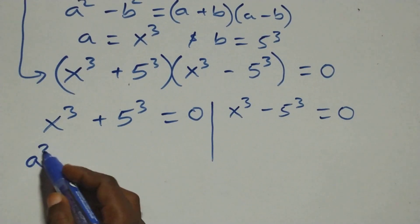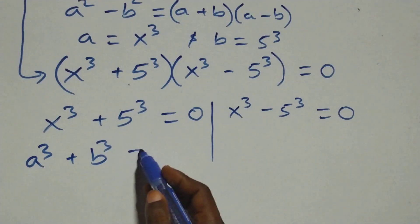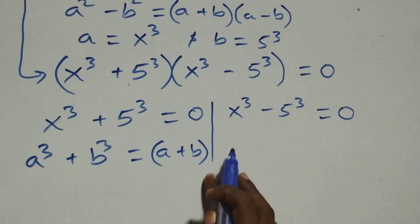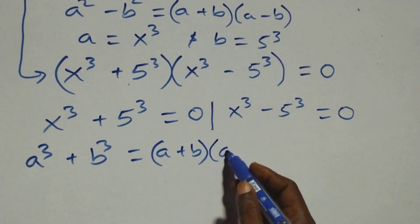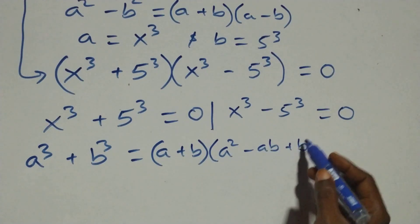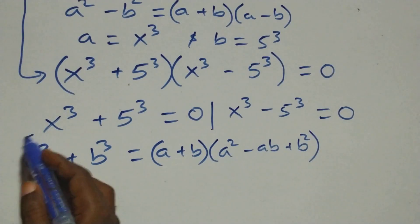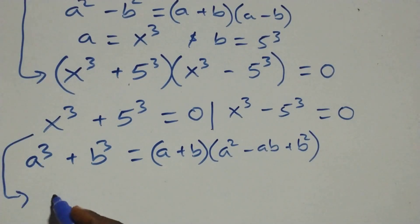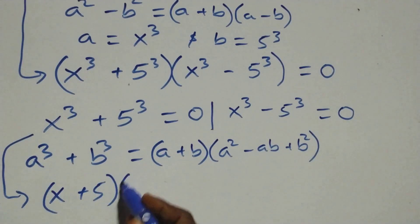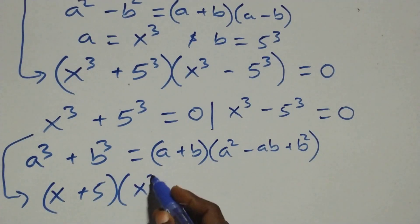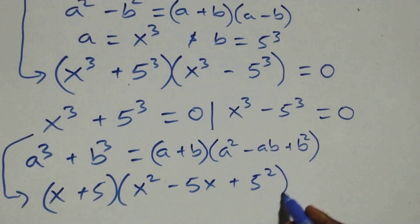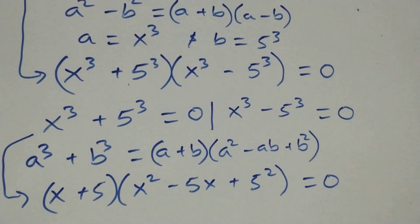Solving on this side, we apply a cubed plus b cubed equals a plus b into bracket a squared minus ab plus b squared. All we have becomes x plus 5 into bracket open bracket x squared minus 5x plus 5 squared equals 0.